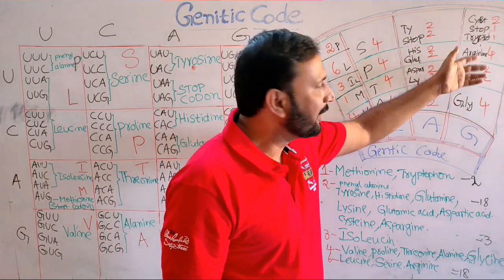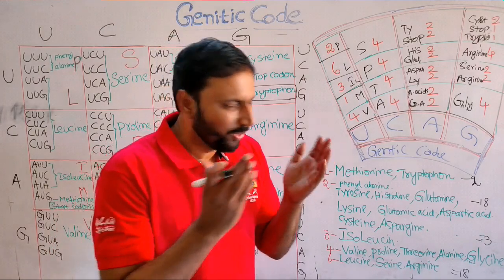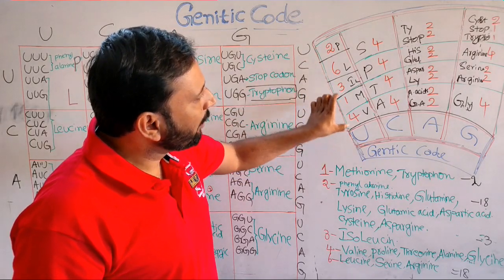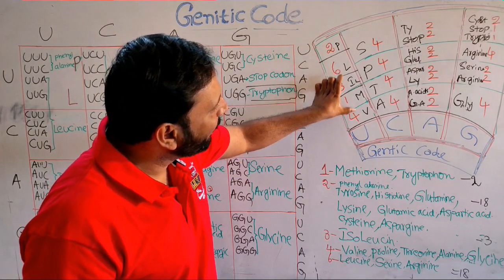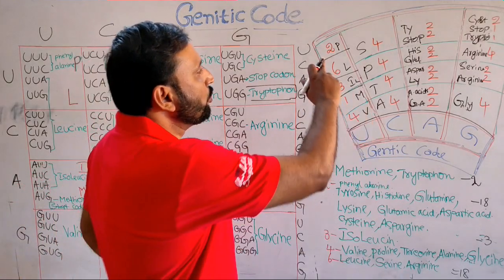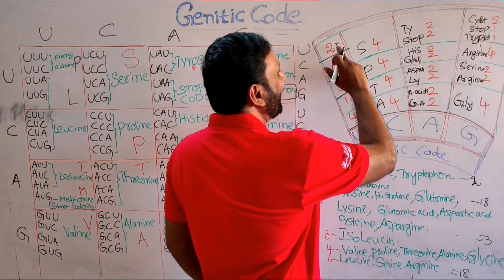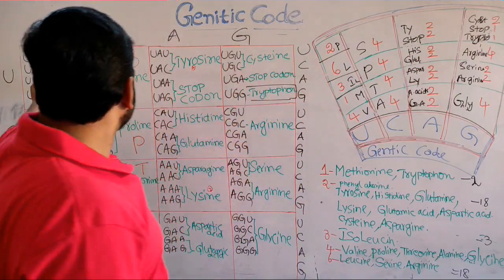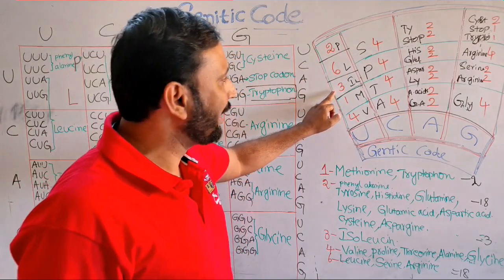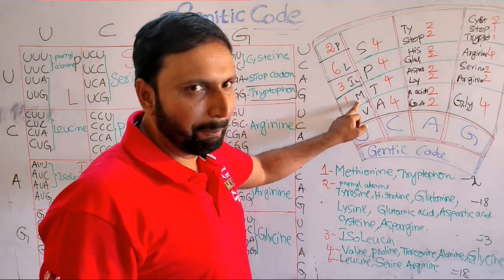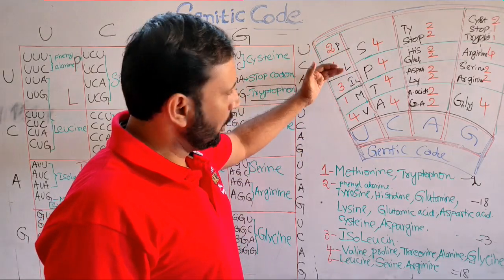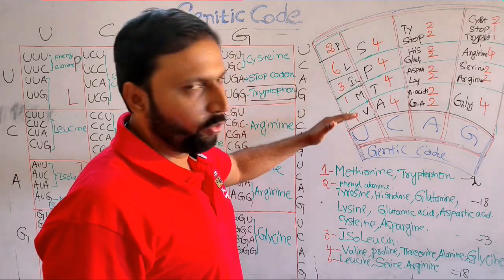All are 2 for the third row. The pattern is 2, 6, 3, 1, 4. Another codon gives the mnemonic P-L-I-M-V. Two codons code for phenylalanine. Six codons code for leucine. Three codons code for isoleucine. One codon codes for methionine. Four codons code for valine.